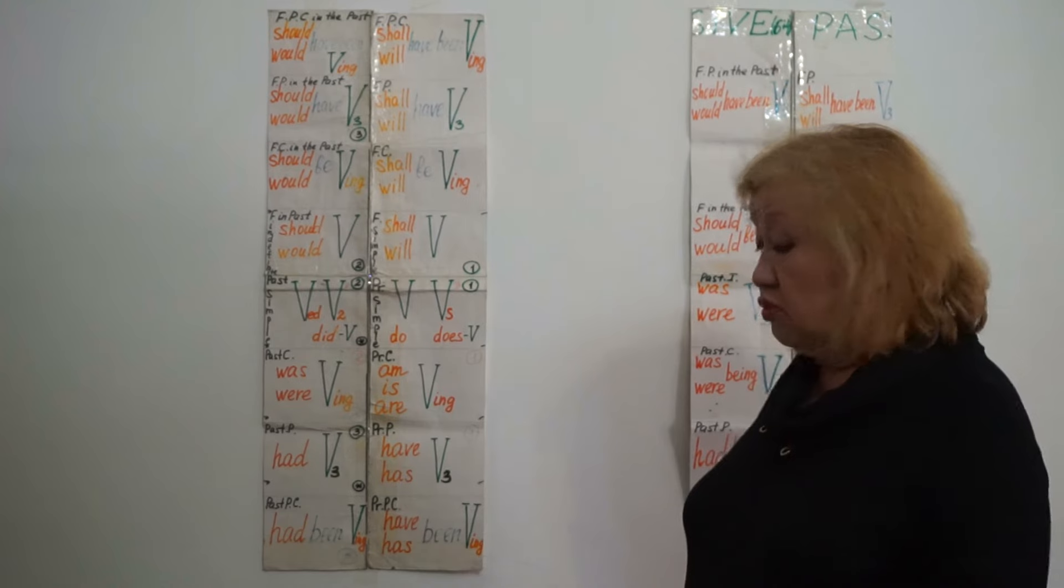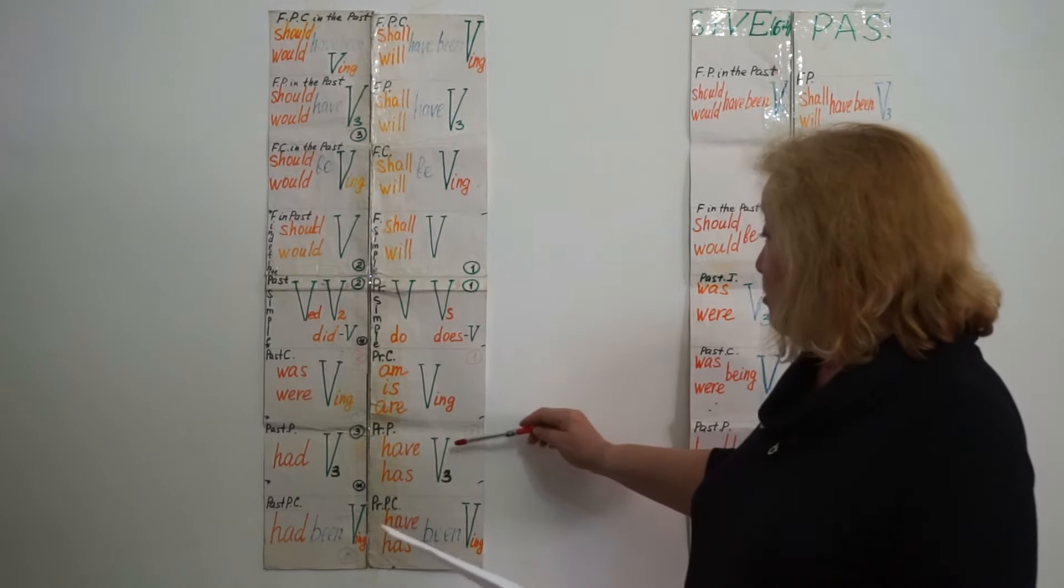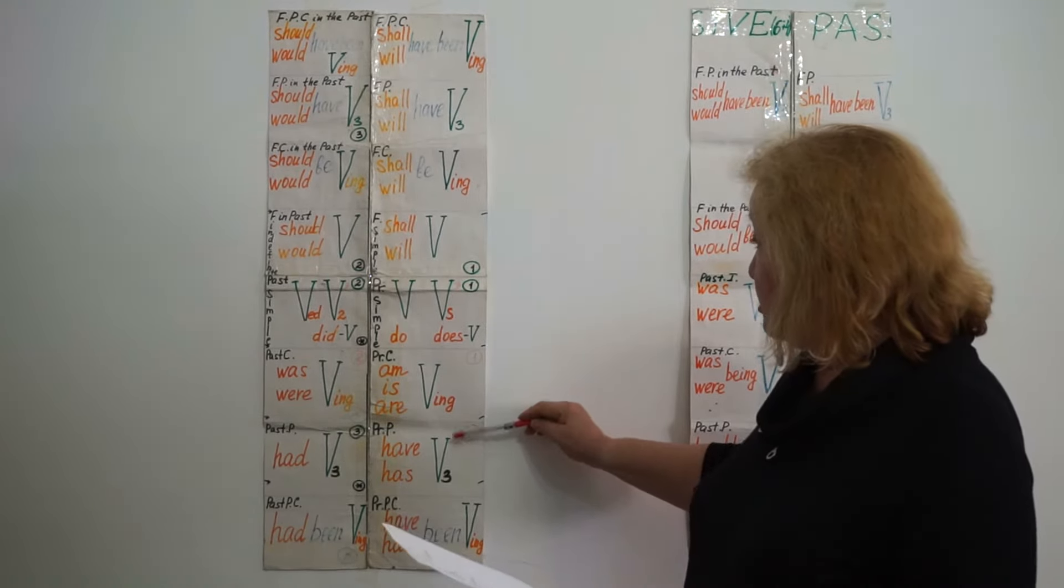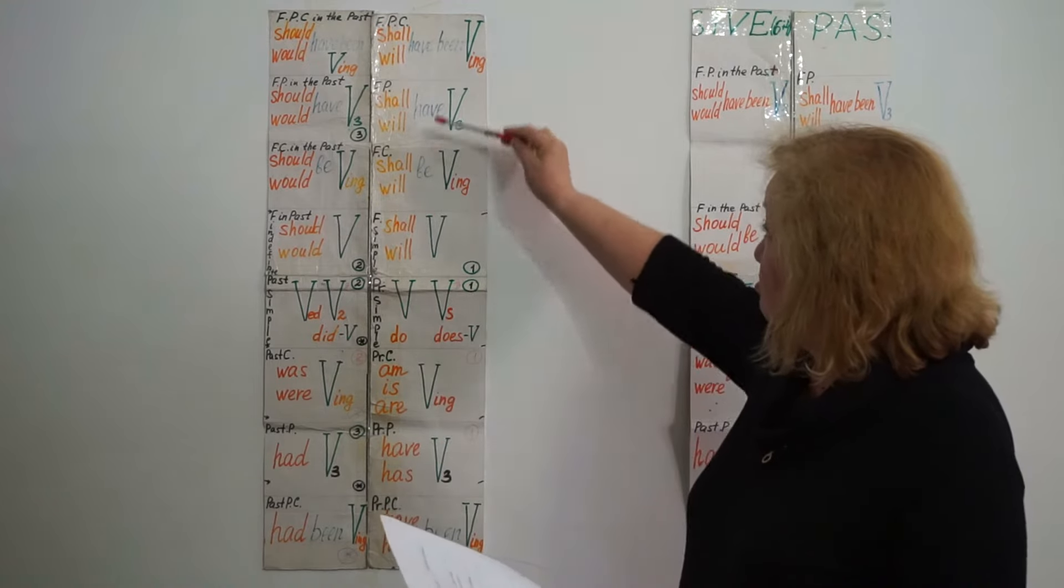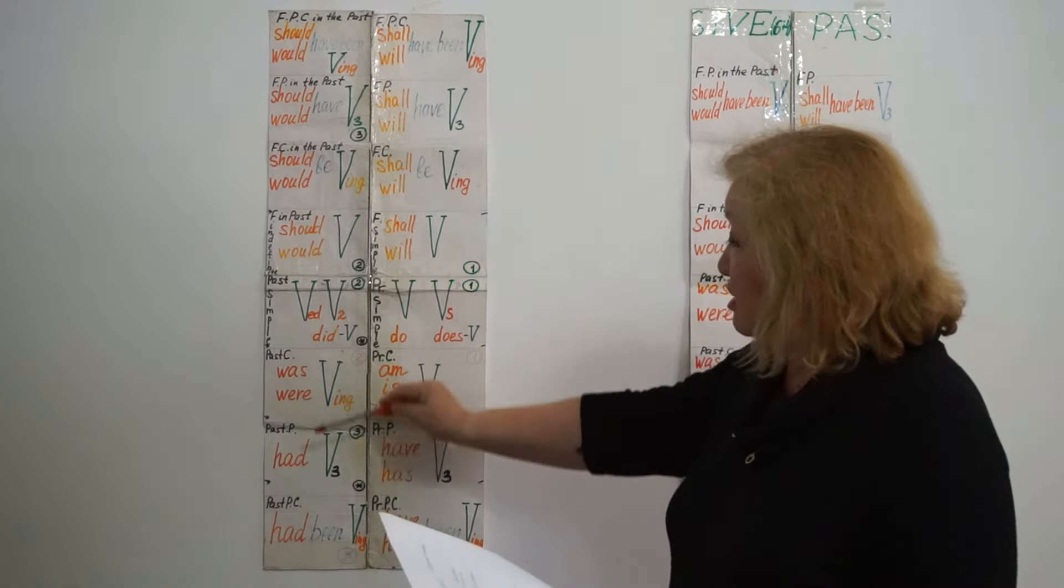Then, the verb to be also has four tenses. Present simple, present perfect, future simple, future perfect. And the same here.